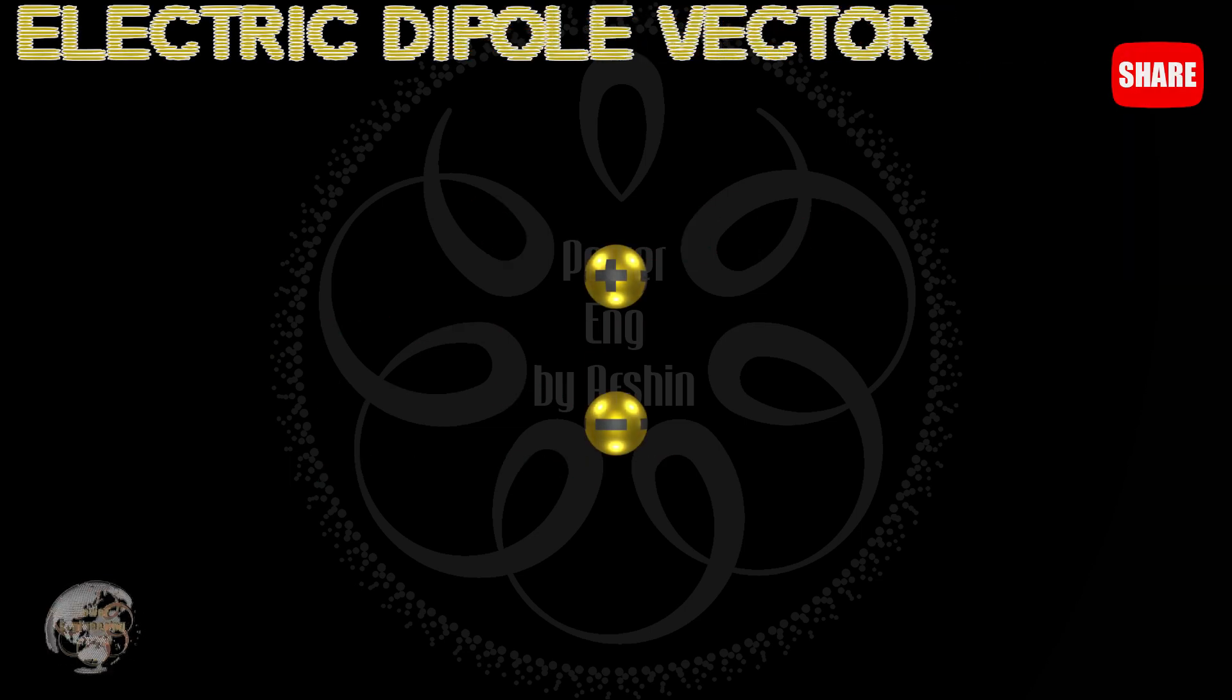An electric dipole consists of two electric charges, one positive and one negative, placed a small distance apart.